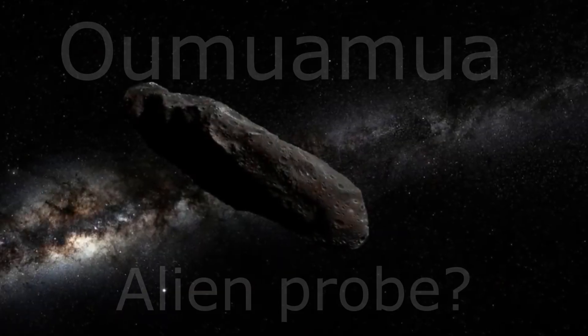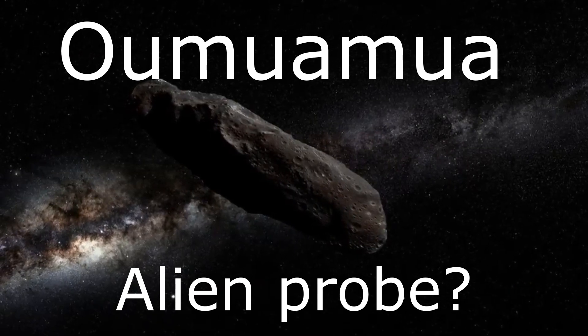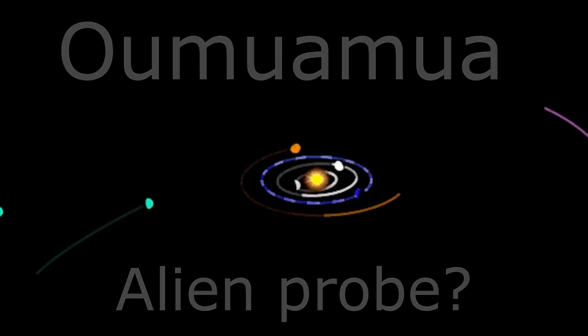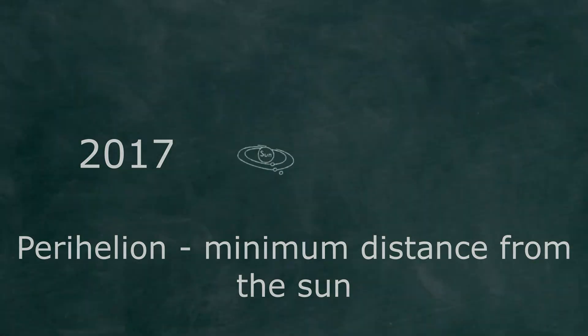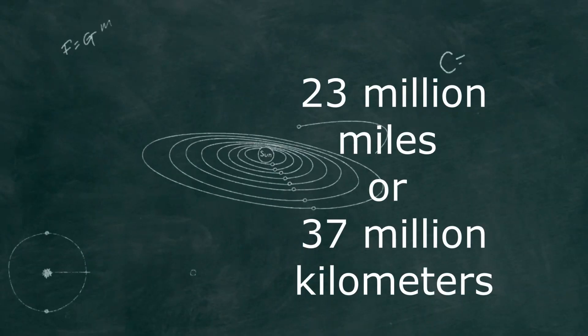The celestial object known as Oumuamua was not detected by astronomers until it had already traversed a considerable distance within our solar system. On September 9, 2017, the object achieved perihelion, denoting its minimum distance from the sun, at a proximity of approximately 23 million miles, or 37 million kilometers.